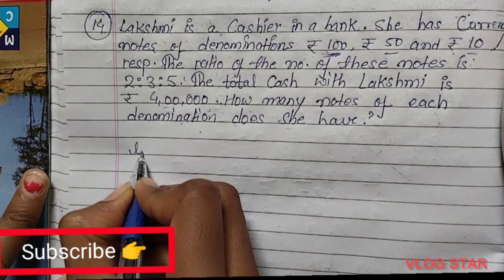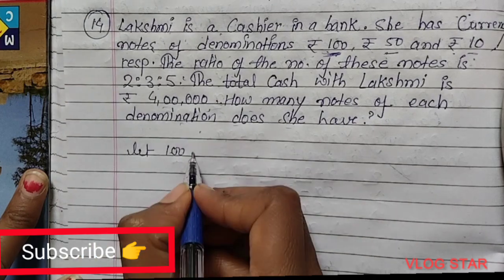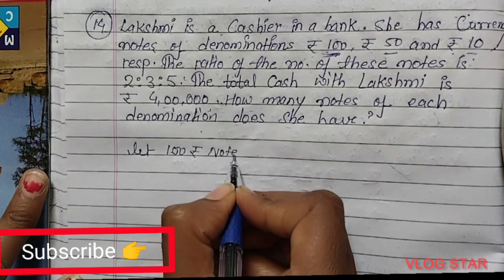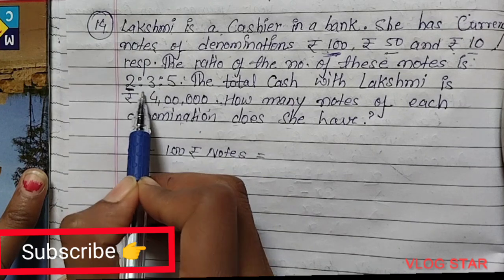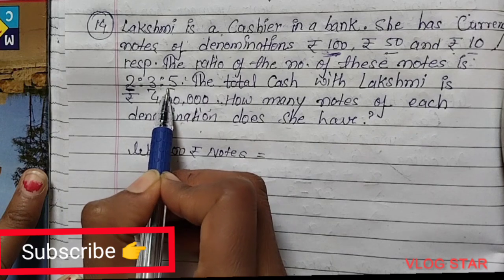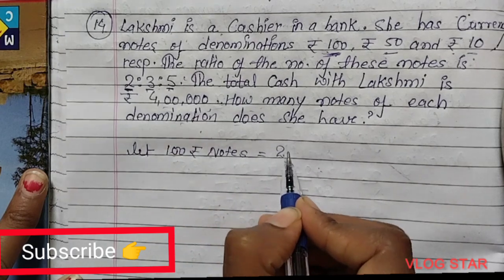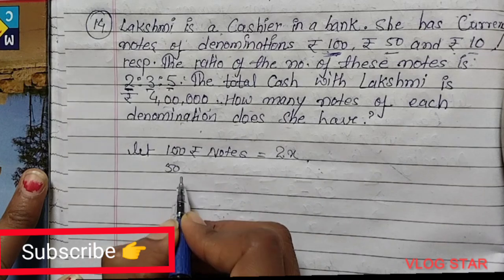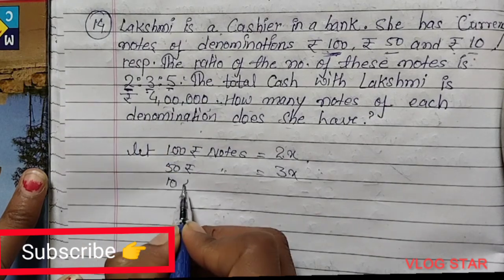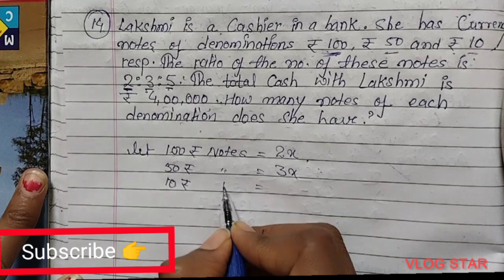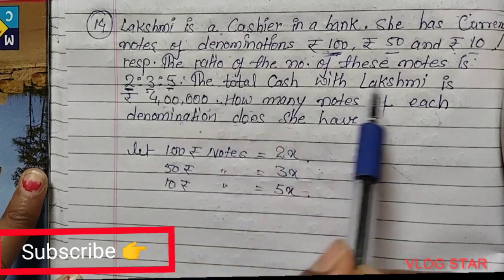We need to find the number of ₹100 rupees notes, ₹50 rupees notes, and ₹10 rupees notes. The first ratio corresponds to ₹100 notes, second to ₹50 notes, and third to ₹10 notes. So I'm going to let ₹100 notes = 2x, ₹50 notes = 3x, and ₹10 notes = 5x.